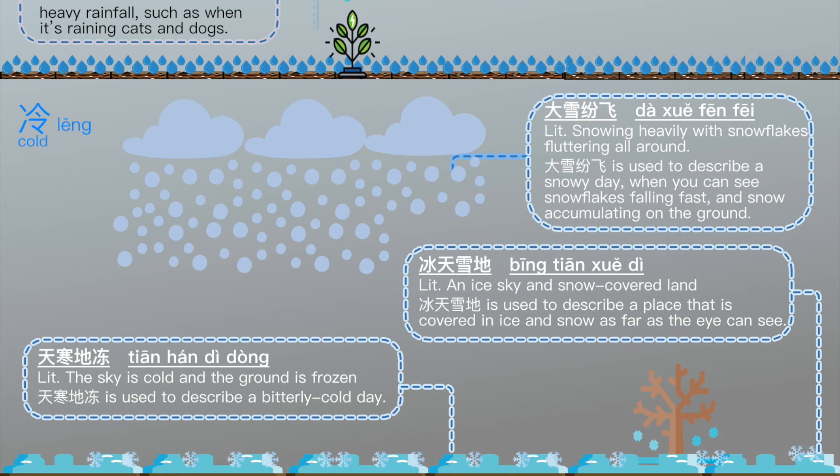冰天雪地 — An ice sky and snow covered land. 冰天雪地 is used to describe a place that is covered in ice and snow as far as the eyes can see. 天寒地洞 — The sky is cold and the ground is frozen. 天寒地洞 is used to describe a bitterly cold day.